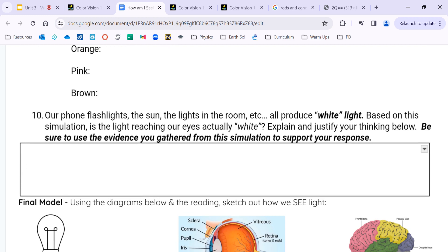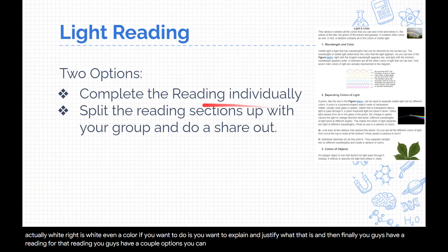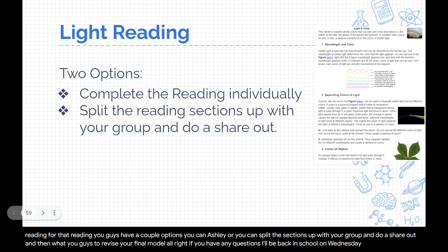Finally, our question is: when you walk into a room — school, home, or outside — we perceive white light. Is the light actually white? Is white even a color? We want to explain and justify what that is. You guys also have a reading — you can read it individually or split the sections with your group and do a share-out. Then revise your final model. If you have any questions, I'll be back in school on Wednesday — talk to you guys soon.